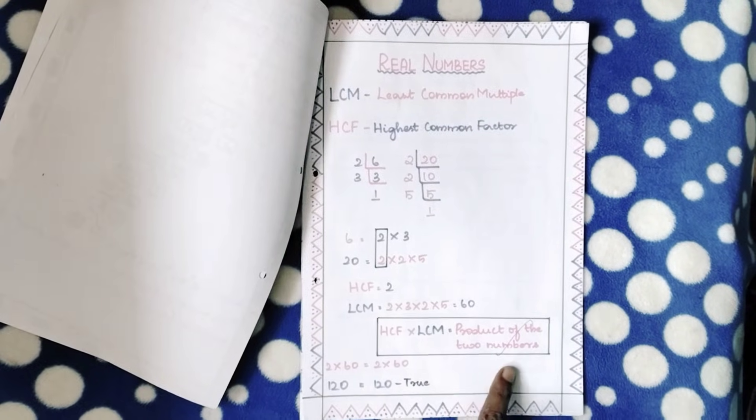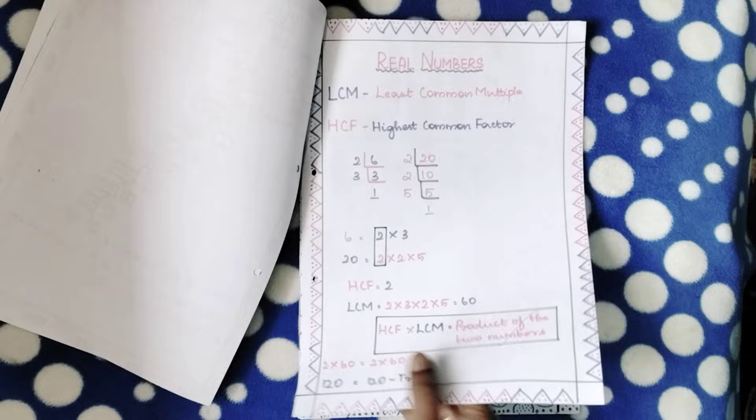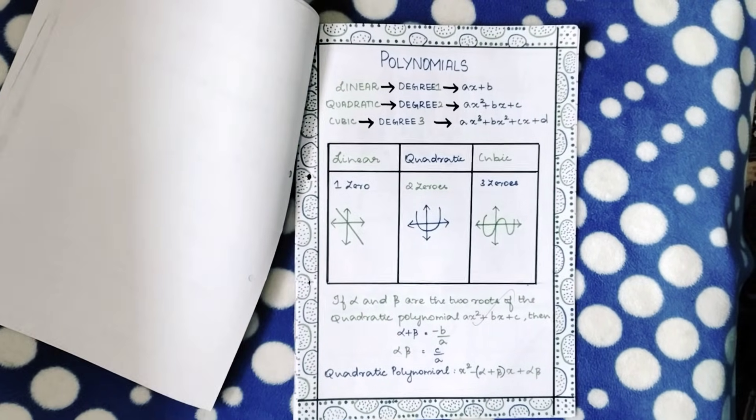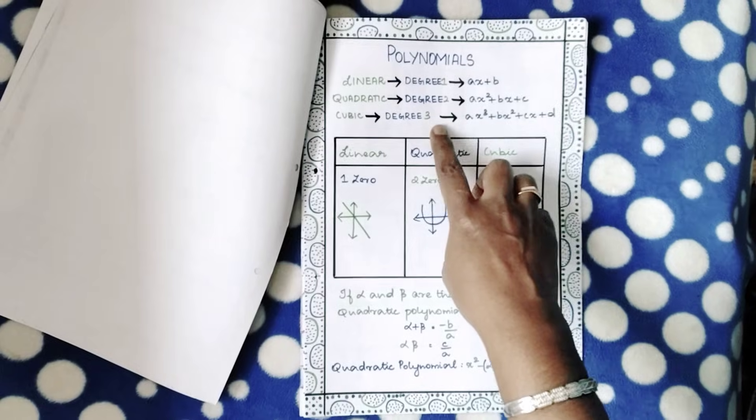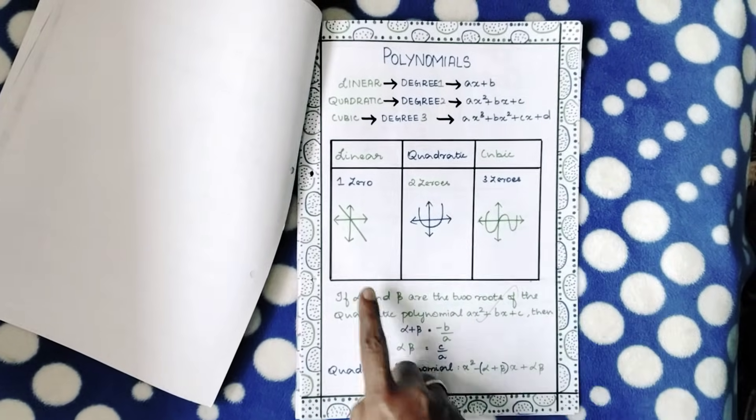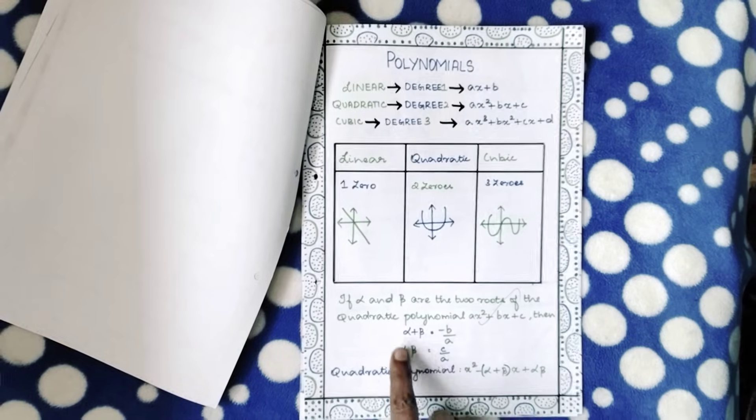Page 3, polynomials. She's explained what's linear, quadratic, and cubic in a very simple way. She's given how the graph will be, and with respect to that...